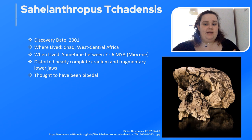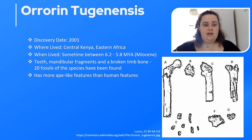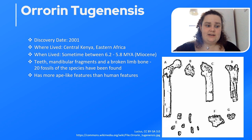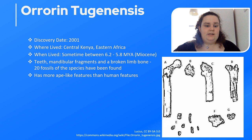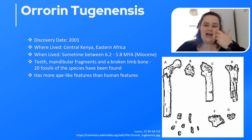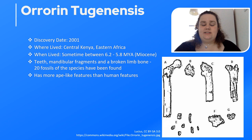Orrorin tugenensis was discovered in 2001 in central Kenya, Eastern Africa, and is thought to have lived 6.2 to 5.8 million years ago during the Miocene. Only 20 fossils have been found so far — teeth, mandible fragments, and a broken limb bone. The teeth are extremely ape-like, whereas the femur suggests Orrorin could have been habitually bipedal. The rest of the post-cranial body indicates tree climbing, and an arm bone suggests it could also swing through trees. Overall, Orrorin has more ape-like features than human features.